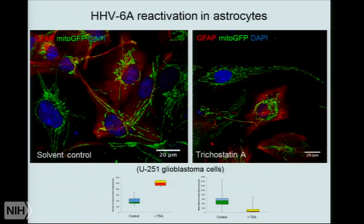This is the astrocyte cell line U251, and you can see that in these cells also, the red doesn't mean virus reactivation — rather, the red is a GFAP staining to indicate that these are astroglial cells. You can see that the mitochondria show a similar type of phenotype.